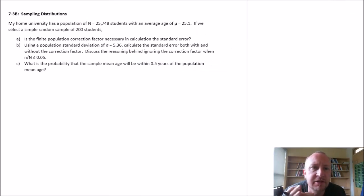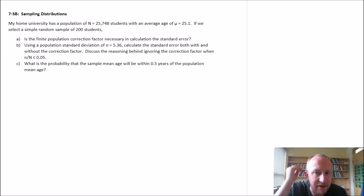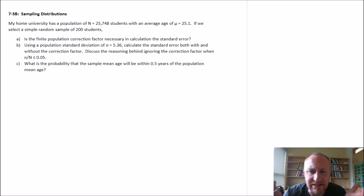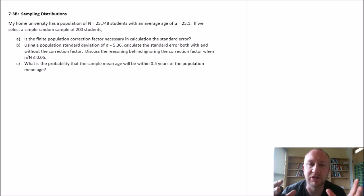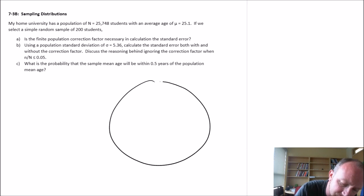Welcome back. In this exercise we're going to be looking at sampling distributions once more, this time with a finite population that we're going to be drawing from. We need to take into consideration the possibility that we'll need the finite population correction factor. Basically, this is to correct for the amount of variability that would exist in our sample as our sample approaches the limits of this finite population.